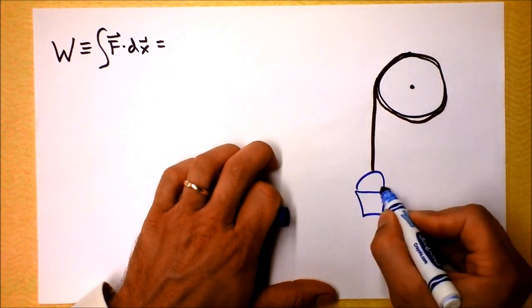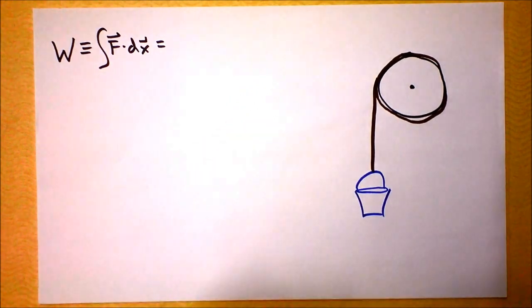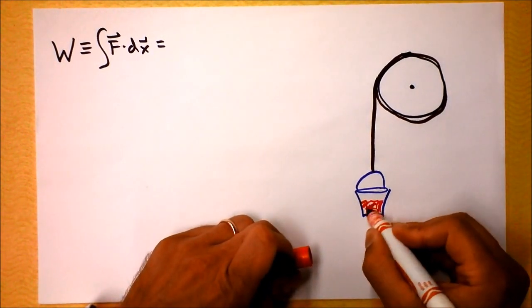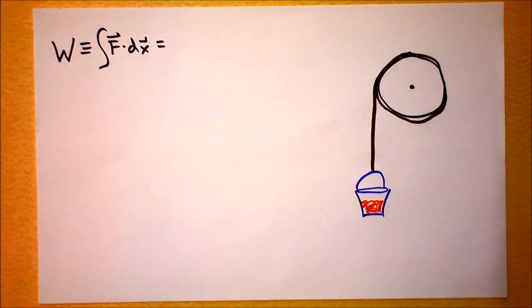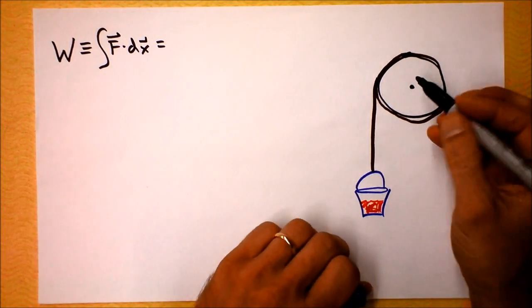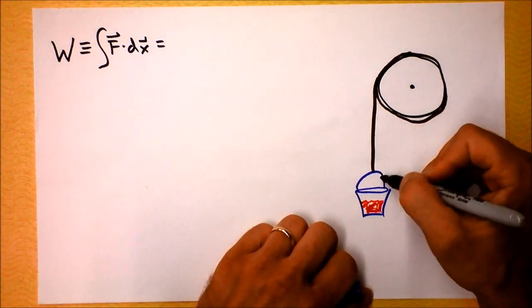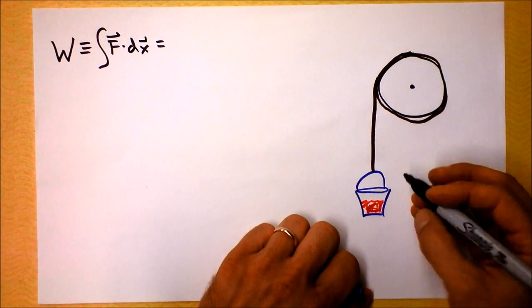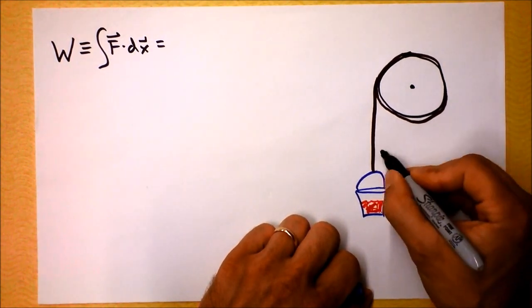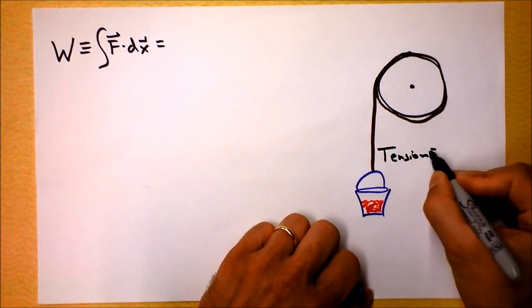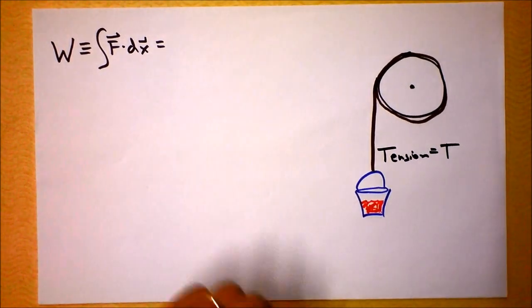Let's say that the bucket is full of monkey blood. Don't ask why, it just is. Somebody's got to haul that up, or maybe it's falling down. So this is some kind of Indiana Jones thing, and the monkey blood is falling down.